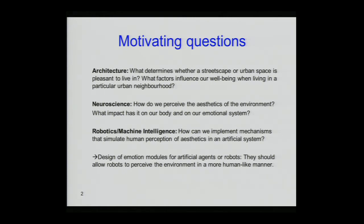There are motivating questions from three areas. An architect could ask, what determines whether an urban space is pleasant to live in? A neuroscientist could ask, how do we perceive the aesthetics of the environment and what influences does it have on our body? And as a roboticist, I could ask, how do we implement all this?